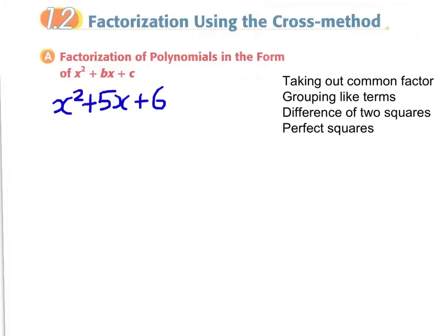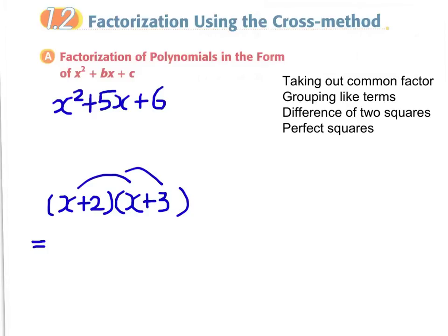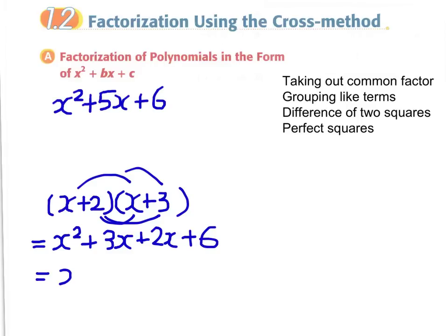But before we can factorize this, let's reverse our process and do an expansion of two factors. If we expand x plus 2 times x plus 3, we simply expand the two factors: we have x squared plus 3x, then plus 2x plus 6 — since 2 times 3 is 6. And finally we have the expression x squared plus 5x plus 6.